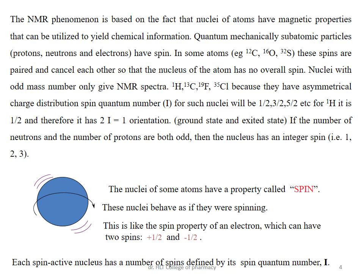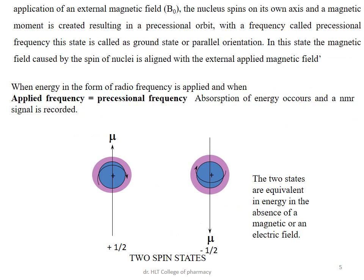Even mass number atoms such as carbon-12, oxygen-16, and sulfur-32 are inactive in NMR spectroscopy because their spins are paired and cancel each other. Only nuclei with odd mass numbers — 1H, 13C, 19F, and 35Cl — with spin quantum numbers of 1/2, 3/2, or 5/2 are active in NMR spectroscopy.